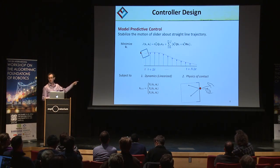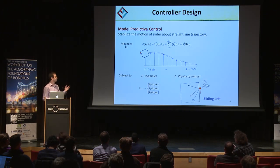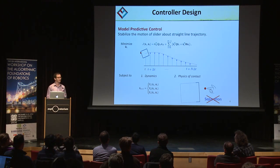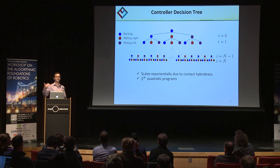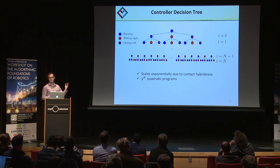The dynamics are written in hybrid form because you have different modes. For example, if you're sticking, you follow equations one; if you're sliding right or left, you follow different motion equations. In our controller design, we neglect the case of separation, assuming the pusher always maintains contact with the slider. At each instant of the optimization, you need to decide what contact mode you'll be in. Because there are n steps in the finite horizon, this decision process forms a tree of optimization programs that scales exponentially due to hybridness — requiring solving 3^n quadratic programs in total.